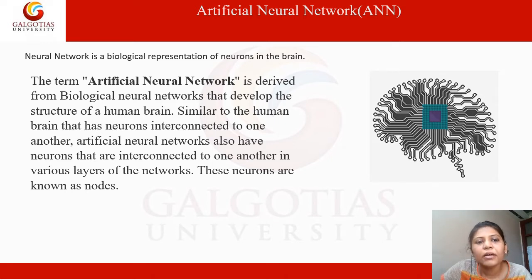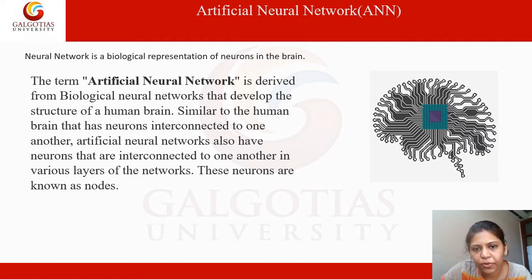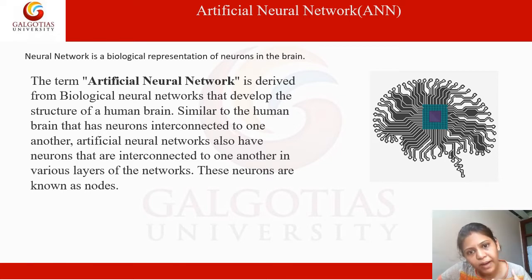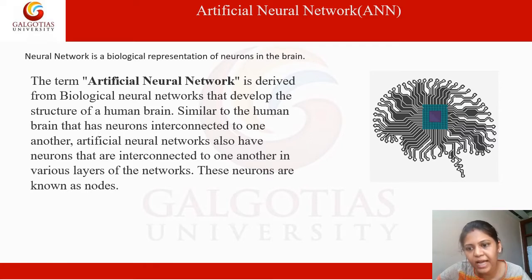So now it is clear: artificial means the thing that is made by humans, and neural network is a biological representation of neurons in the brain. So artificial neural network means a thing that is made by humans in such a way that the machine behaves like a human brain — as a human brain reacts, the machine also reacts the same.